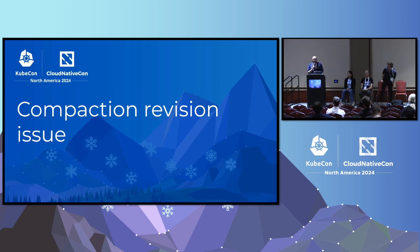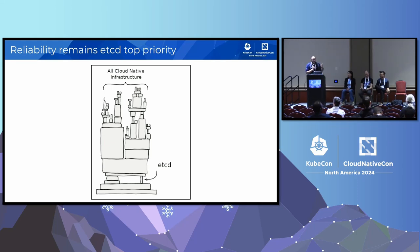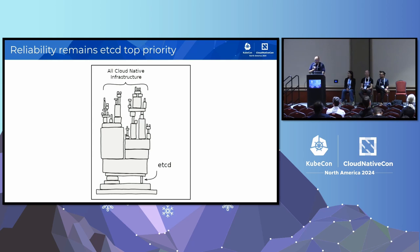Today I want to talk about the compaction revision issue. Around half a year ago, we discovered a new issue, and I want to walk through how the community does discovery, how we analyze it, what caused it, and how we make sure such things will happen less and less in the future. This is all because etcd is important — reliability remains our top priority. We are the building block at the backbone of the cloud-native world, so we should be proud of it but also take responsibility.